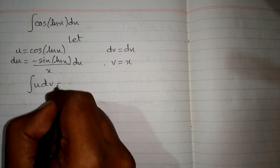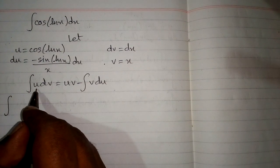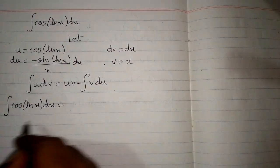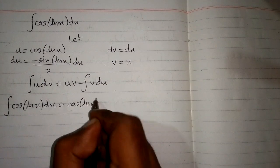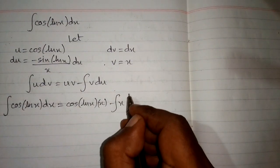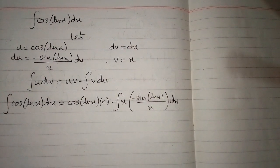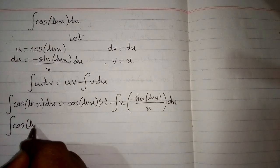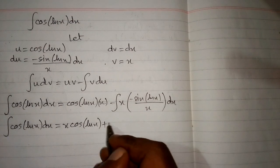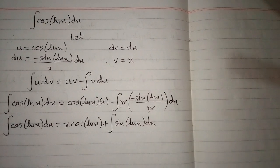The formula of integration by parts is: integral of u dv equals uv minus integral of v du. Substituting, u is cosine of ln of x, v is x, and du is minus sine of ln of x upon x dx. So the integral of cosine of ln of x dx equals x times cosine of ln of x, and minus times minus is plus. The x's cancel, leaving plus integral of sine of ln of x dx.